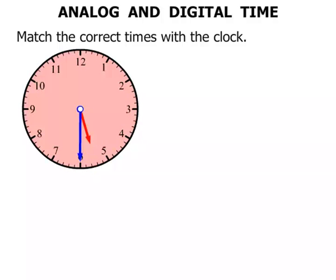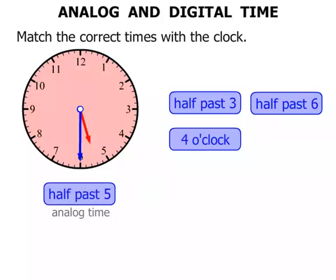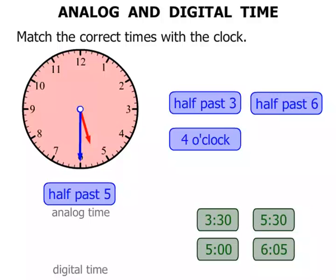Our next clock. This time the big hand is pointing straight down, so hopefully you're thinking it's probably half past something. So in terms of analog time, which one would it be? Well, look at the clock. The shorter hand has just gone past the five, so it's half past five. In digital time, how do we write half past five? We write it as 5:30.